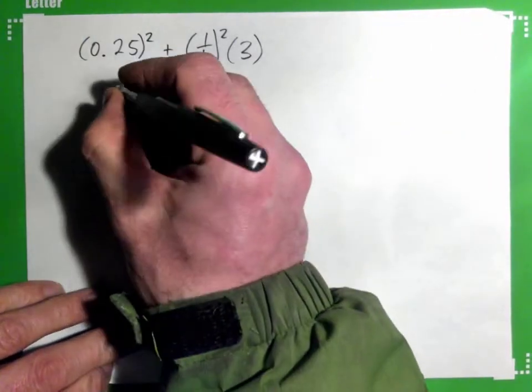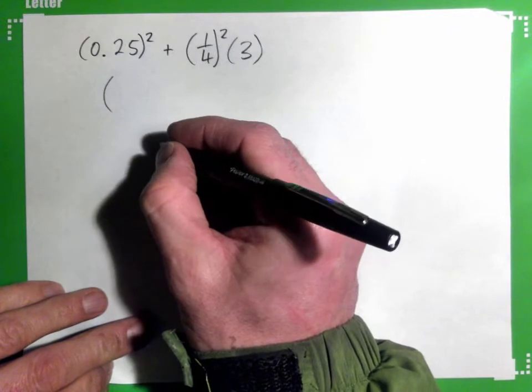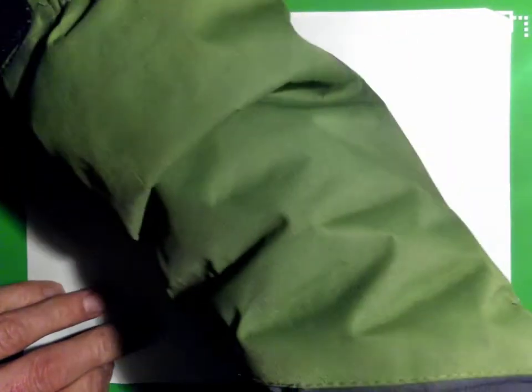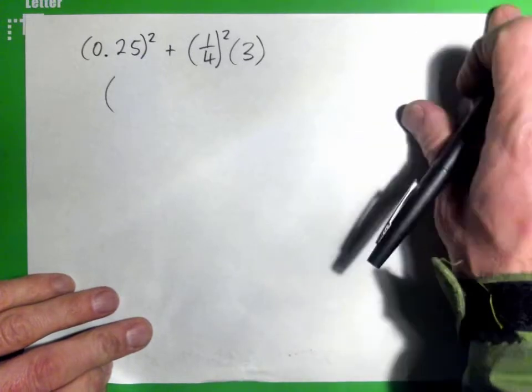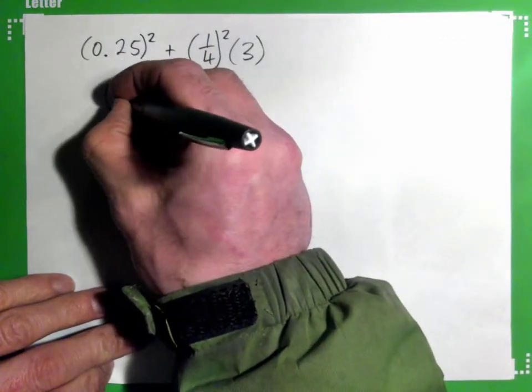What's 0.25 as a fraction? It's a quarter, isn't it? A quarter in money is 25 cents, so that's a quarter in money, right?